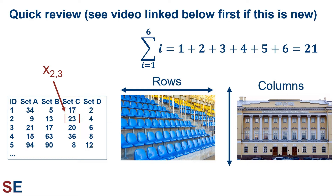The summation symbol looks like a large E — that's a Greek sigma. Underneath the symbol we have the dummy variable, in this case i, showing what number it starts with, which is 1, and it increases by steps of 1 up to the value at the top of the symbol, which is 6. After the symbol we just have i, so this summation is i=1 plus i=2 plus i=3 plus i=4 plus i=5 plus i=6, and we add all those up to get 21.